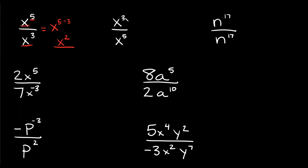So now this time we have the 3 on top and the 5 on the bottom, but still the same process. We have the same base, we've got an x here and an x here, so just keep the x and then subtract your exponents. And very important — again — the one that's on top is the one that you write first. So the 3 is on top this time, so we write the 3 first, and then we're going to subtract the 5, minus 5. So 3 minus 5 is equal to negative 2, so this is going to be equal to x to the negative 2.